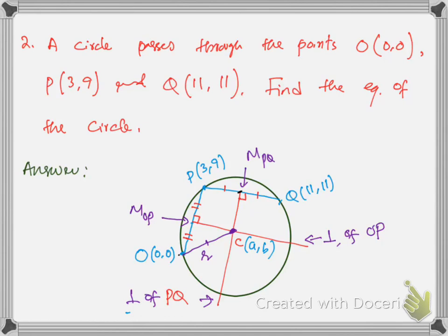Question number 2: a circle passes through the points O, P, and Q — find the equation of the circle. Since the circle passes through 3 points O, P, and Q, you have to make 2 chords.